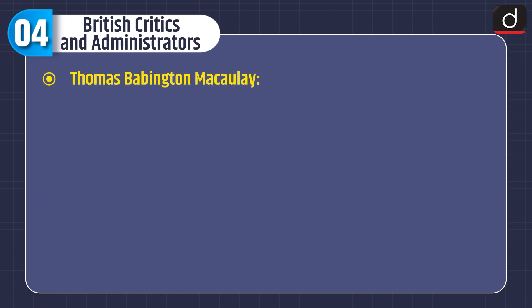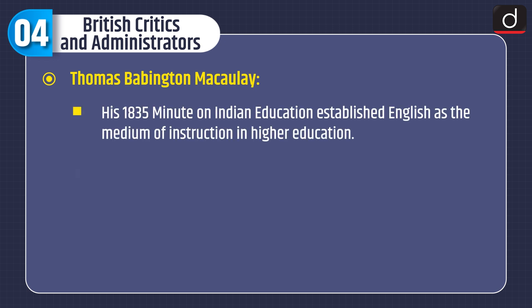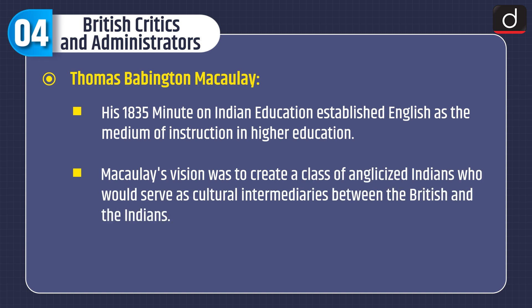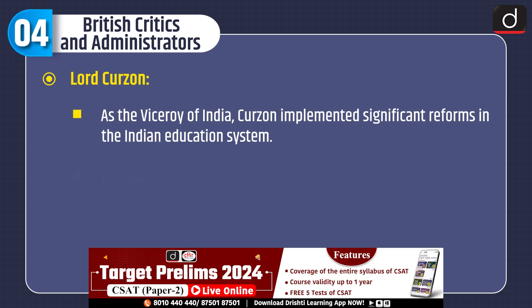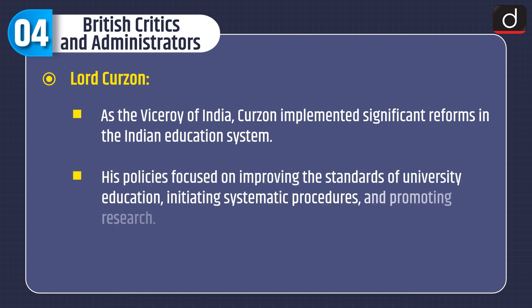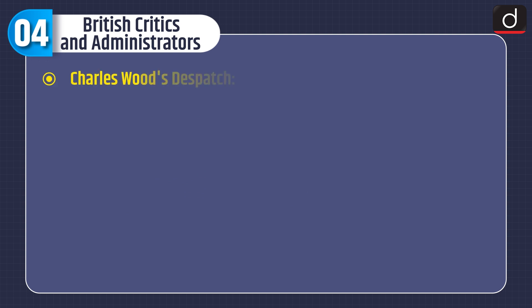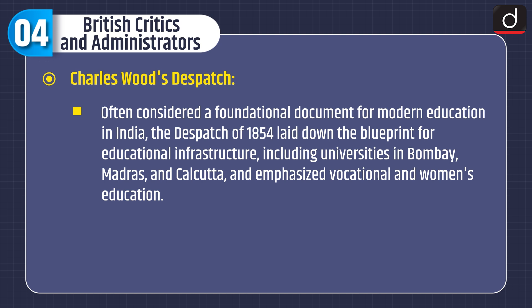Now let's discuss British critics and administrators. First is Thomas Babington Macaulay. His 1835 Minute on Indian education established English as the medium of instruction in higher education. Macaulay's vision was to create a class of Anglicized Indians who would serve as cultural intermediaries between the British and the Indians. Lord Curzon, as the Viceroy of India, implemented significant reforms in the Indian education system. His policies focused on improving the standards of university education, initiating systematic procedures and promoting research. Charles Wood's Dispatch of 1854, often considered a foundational document for modern education in India, laid down the blueprint for educational infrastructure, including universities in Bombay, Madras, and Calcutta, and emphasized vocational and women's education.